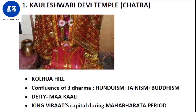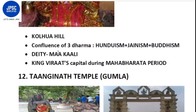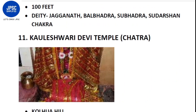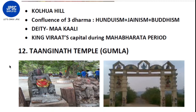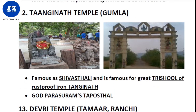The 11th temple is the Kaleshwari Devi temple, located in Chatra district over the Kulhuva hill. This temple is the confluence of three dharmas - Hinduism, Jainism, and Buddhism. The deity worshipped here is Ma Kali. This place was King Virat's capital during the Mahabharata period. The next temple is the Tanginath temple, located in Gumla district. It is famous as Sivasthali and is famous for the great Trishul of rust-proof iron. This place is known as God Parshuram's Taposthal.